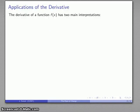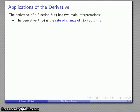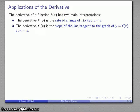Let's focus on the rate of change. The derivative has two main interpretations. The primary one is that it corresponds to the rate of change of a function at a particular place. The other is that the derivative is the slope of the line tangent to the graph of the function at a particular place. Here we'll focus on the first interpretation, the derivative as a rate of change.